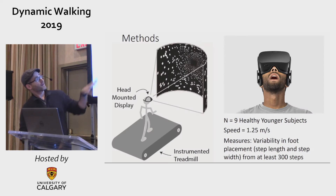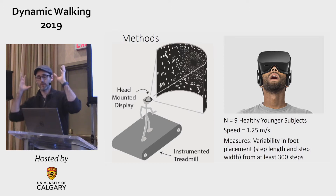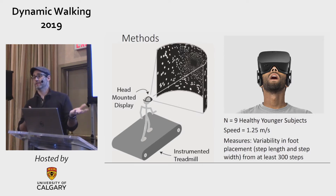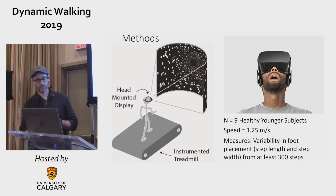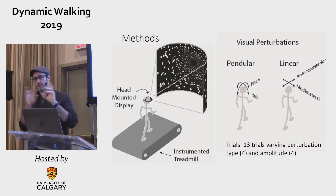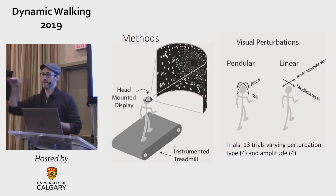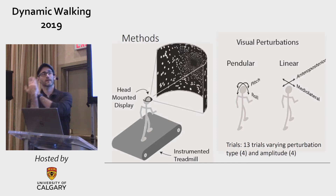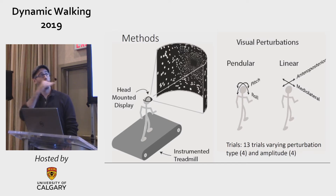Subjects walked on an instrumented treadmill wearing an Oculus Rift head-mounted display. We were very careful to block out any light from the periphery — a lot of sponge around the nose. Subjects took about ten minutes to train and get comfortable, then we began the visual perturbations. For every perturbation trial we measured the variability in step width and step length over at least 300 steps. We had four types of perturbations: pendular or linear in modality, crossed with sagittal or frontal plane — giving us pitch, roll, AP, and ML — each at four amplitudes.